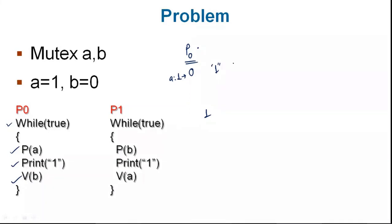After printing 1, V(B) is going to be performed. What does V(B) mean? V(B) means a signal operation — B's value goes from 0 to 1. Okay, now we're going to P1.